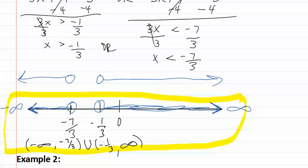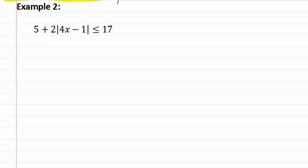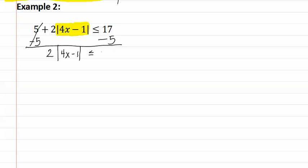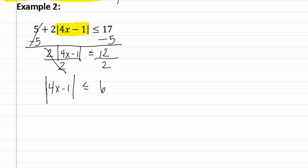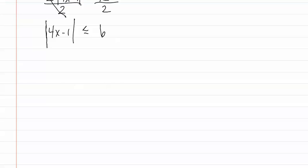Let's look at example two. Once again, the absolute value is not isolated, so we must isolate it before we can continue. Let's start by adding or subtracting — we subtract negative five from each side. This gives us two times the absolute value of four x minus one is less than or equal to twelve. Next, we divide by two. This gives us the absolute value of four x minus one is less than or equal to six. The absolute value is now isolated, so we can finish solving. We see that it is a less than statement, so it is an and inequality.